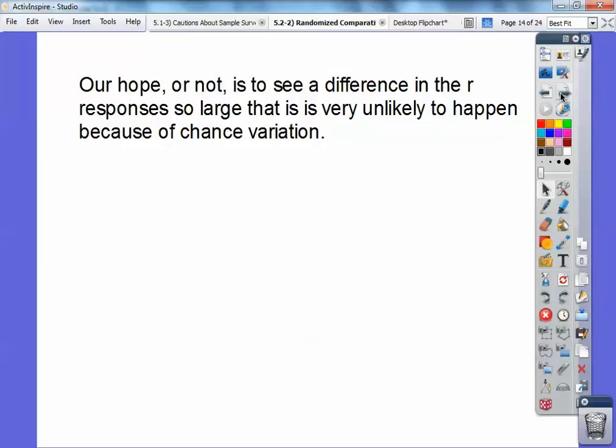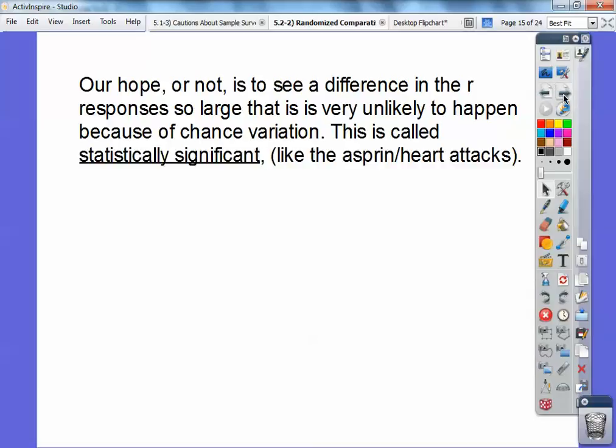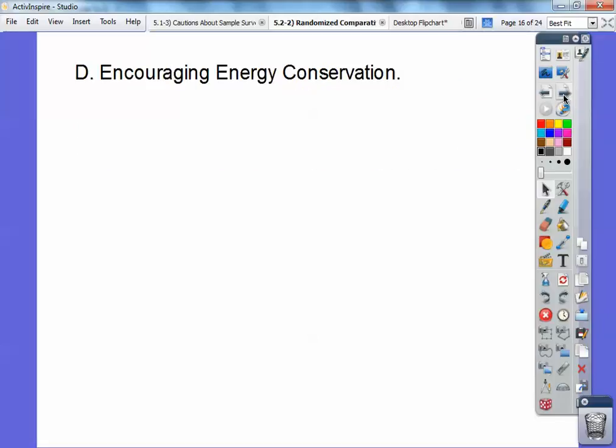Our hope is to see, or not to see, a difference in the response, sorry that R shouldn't be right there. In the response so large, we want to see a difference in the response so large it is very unlikely that that happened just by chance variation. And this is called statistically significant. For example, like that aspirin and heart attack example we did a few days ago. It was so significant that aspirin reduced heart attacks that they concluded that it reduced heart attacks.